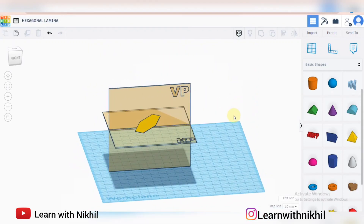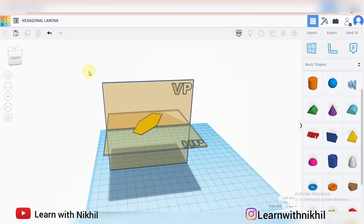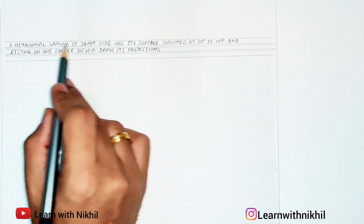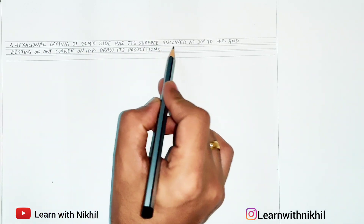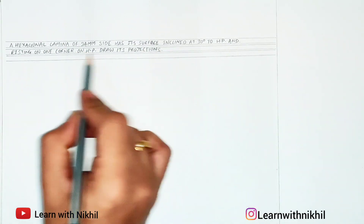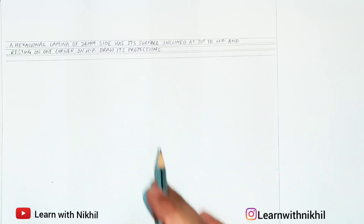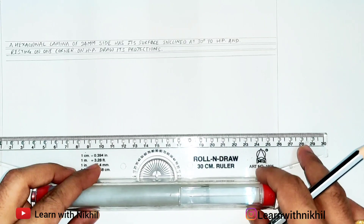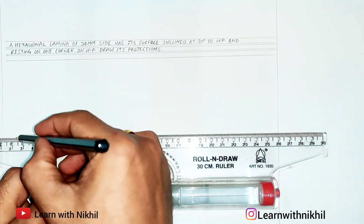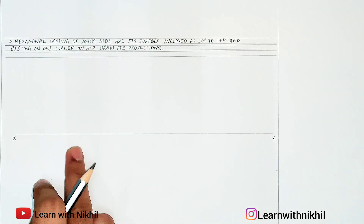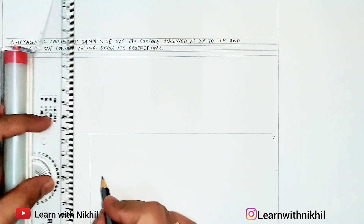Now I'll show you how to draw it on paper. The question reads: 'A hexagonal lamina of 24 millimeter side has its surface inclined at 30 degrees to the horizontal plane and resting on one corner on the horizontal plane — draw its projection.' First step: draw a horizontal straight line as the axis. Above is the vertical plane; below is the horizontal plane. We will draw the hexagonal lamina in the horizontal plane.